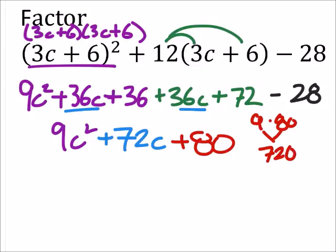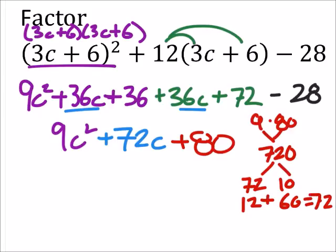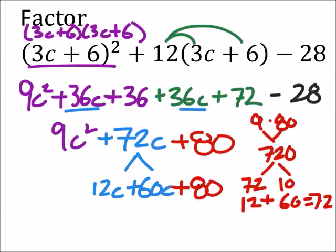And we need two factors of 720 to add up to 72. So 12 plus the 60 would give us the 72, so I'm going to split my 72c up into 12c plus 60c, and then plus that red 80 right there, and we still add that 9c².